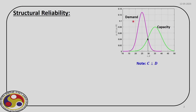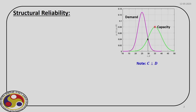When we deal with design, we have capacity and demand. In the deterministic framework, we fix the value of capacity and the value of demand and thereby calculate the factor of safety. However, when we consider the mean value of capacity and demand, the mean value of capacity is more than demand. Therefore, if we use mean value as our design point, we always end up with a safe design because the factor of safety is always more than one.